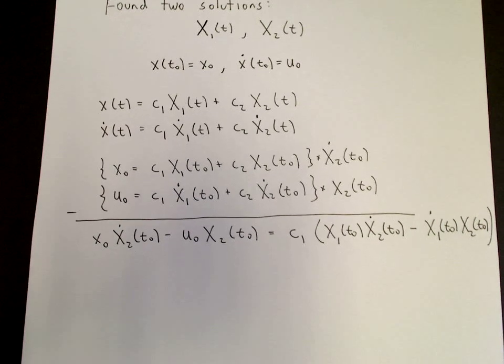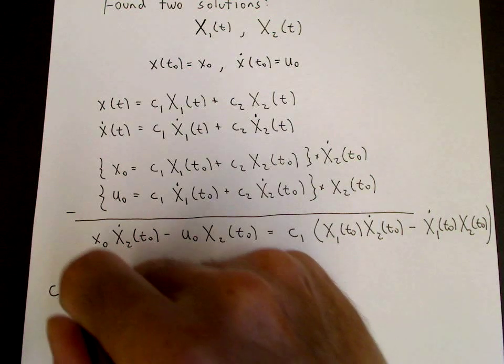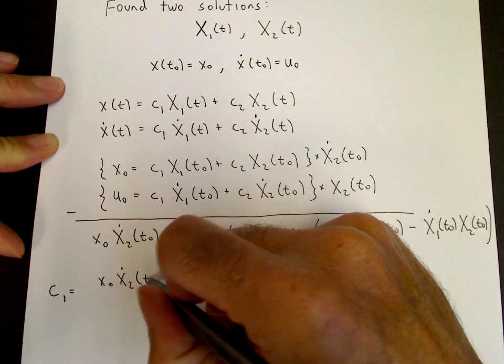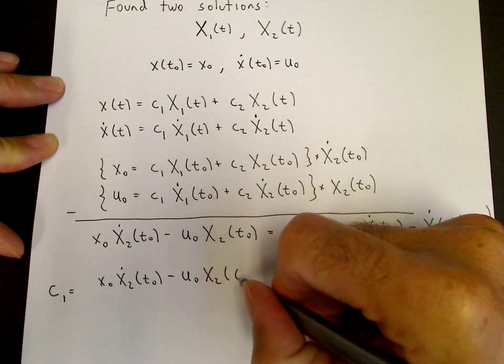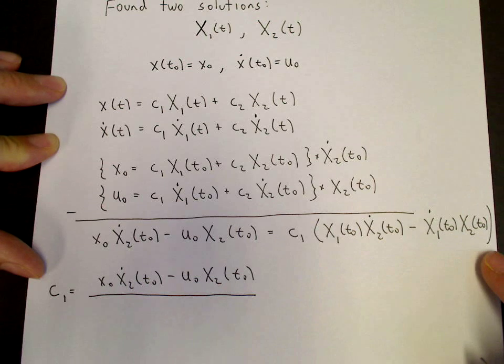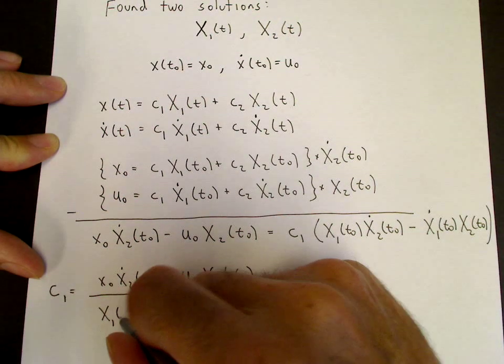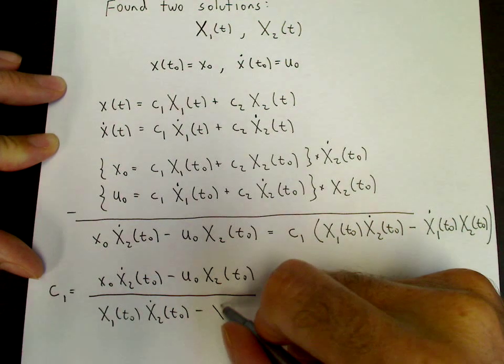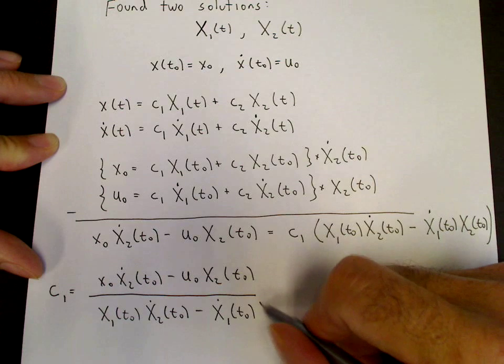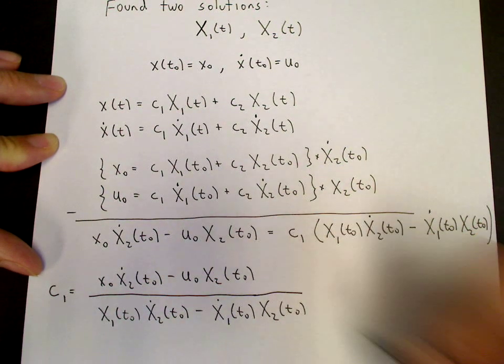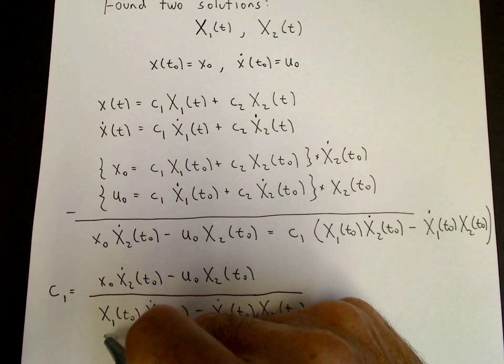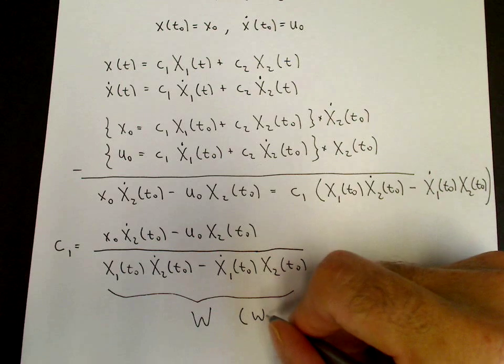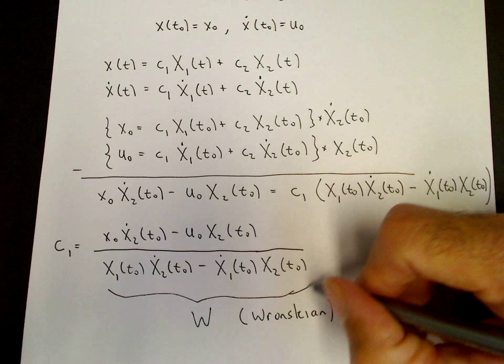So we get c1 is equal to x naught x2 dot of t naught minus u naught x2 of t naught divided by this quantity here: x1 of t naught times x2 dot of t naught minus x1 dot of t naught times x2 of t naught. So we can do that. This denominator here is what's called the Wronskian. We can call that W. So this is the Wronskian.